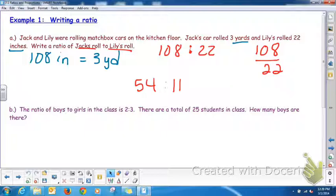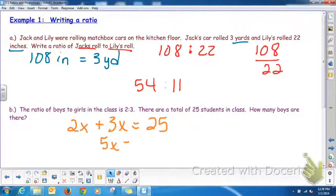this means two parts boy, three parts girl. So two, we don't know how many are in a part, parts boys, plus three parts girls is a total of 25. So combining like terms, 5x is 25,